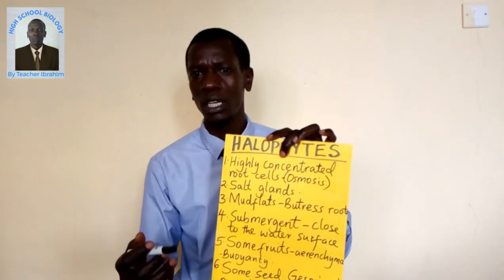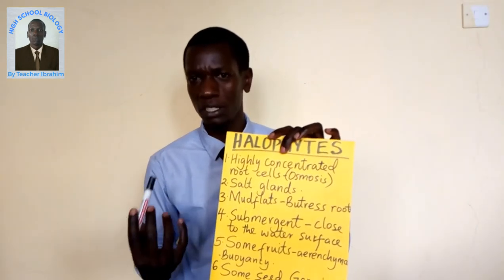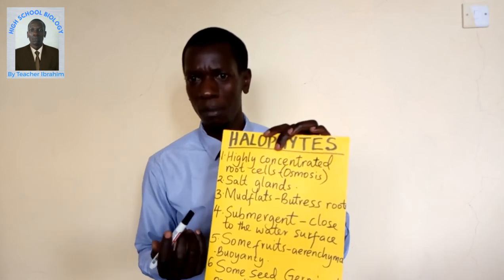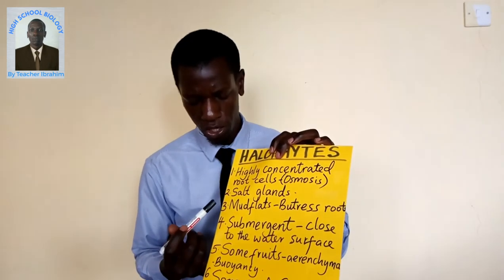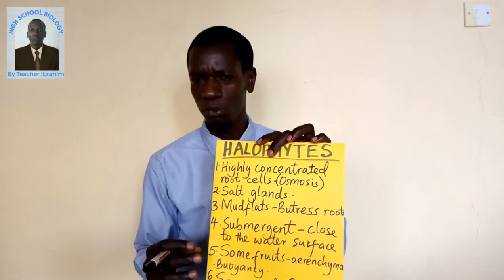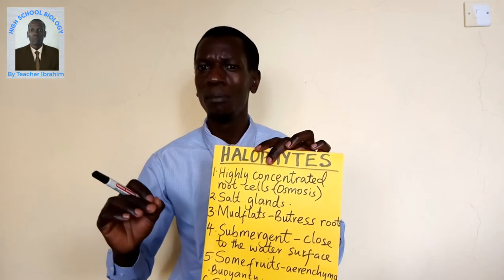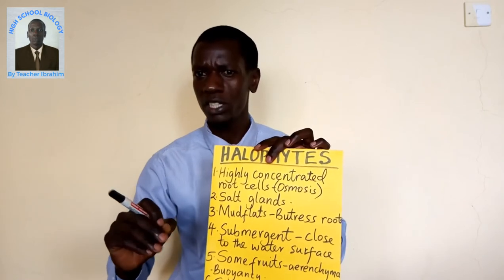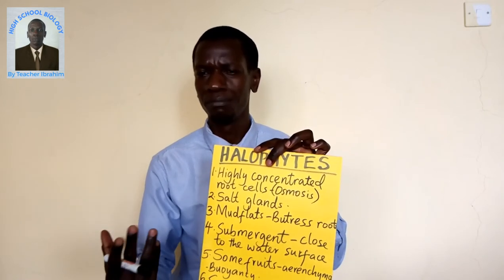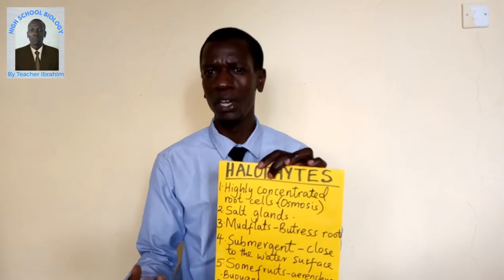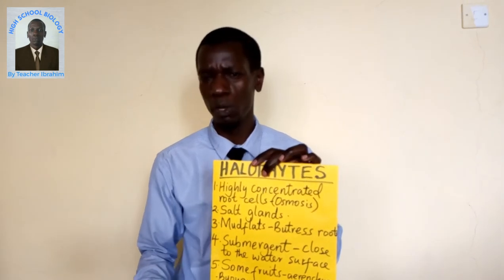Number three: some that grow in mudflats — that is swampy areas — may have buttress roots for anchorage. These buttress roots enable them to hold onto the ground since mudflats are not capable of providing enough support to the plant roots.